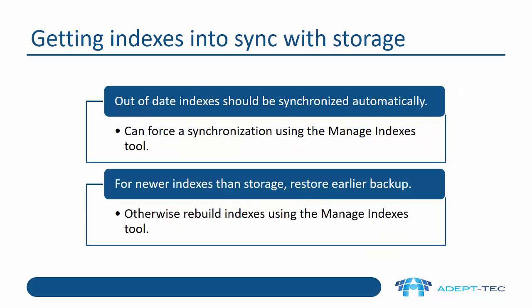So how do we get the indexes into sync with storage? If you've got out-of-date indexes, they should be synchronised automatically. If that doesn't happen automatically, then you can force a synchronisation using the Manage Indexes tool. For indexes that are newer than storage, the best option is to restore an earlier backup of the indexes. This will mean that your indexes won't fail, and then if you fix storage, the indexing servers will automatically index those items. The only other option is to rebuild the indexes using the Manage Indexes tool, and if you have a very large amount of data in your archives with failed indexes, that could take a very long time, particularly if the journal archive is involved.